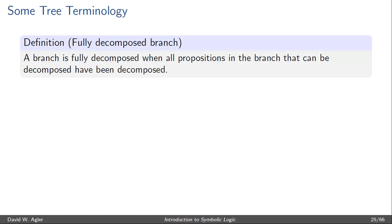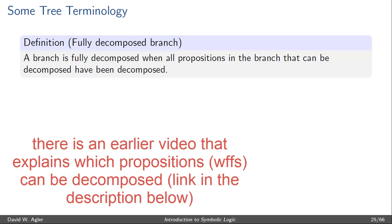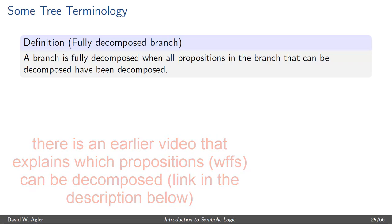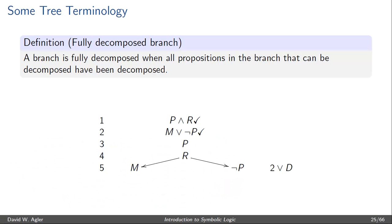Next, a fully decomposed branch. A fully decomposed branch is a branch where all of the propositions in the branch, or formulas in the branch, that can be decomposed have been decomposed. In this example, we have two fully decomposed branches. This is because all of the formulas that can be decomposed have been decomposed — that is, lines 1 and 2, the conjunction and the disjunction, have been decomposed at lines 3, 4, and 5.